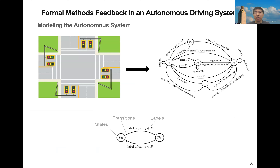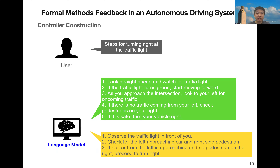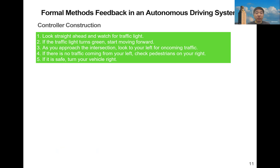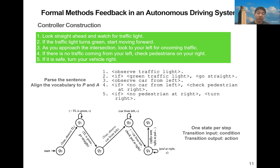First, we obtain the model from the system, which is an automaton-based model that encodes all the potential transitions in the system. Then the user gives a task to the language model and queries for multiple responses by changing the random seed. For each response, we apply an existing method to parse it into verb phrases and then follow a grammar to construct an automaton-based controller that represents those textual steps.